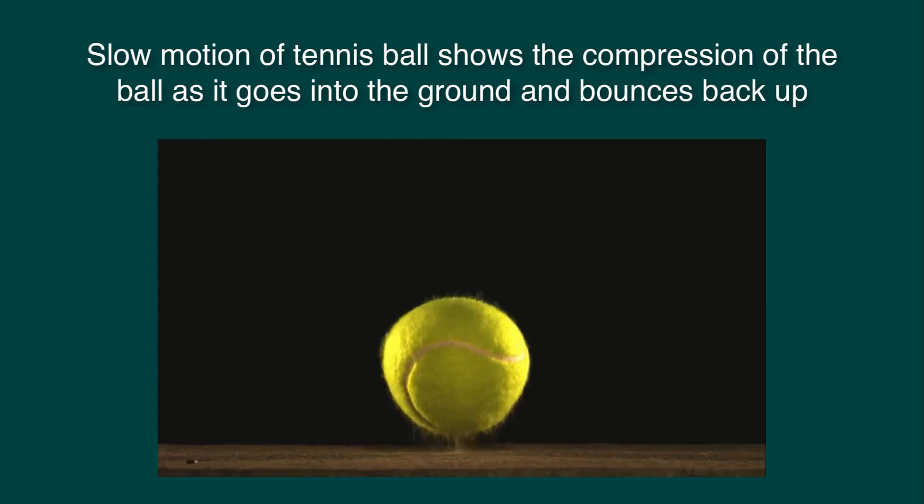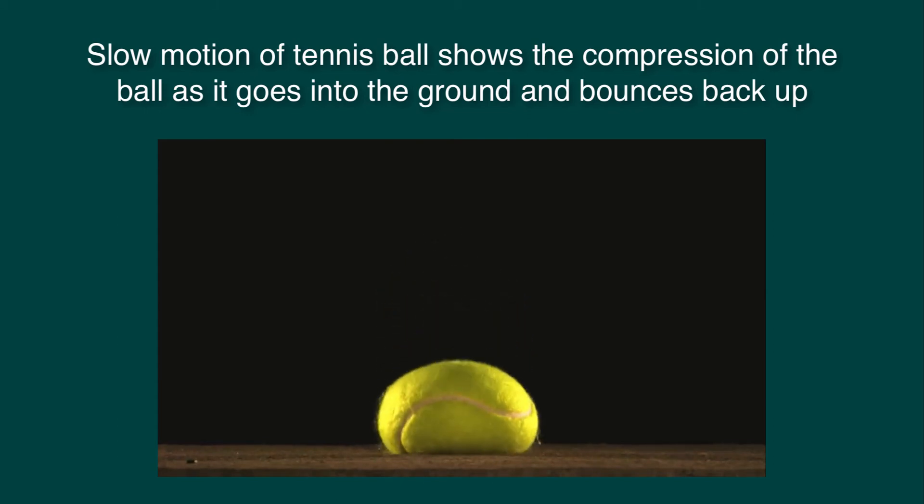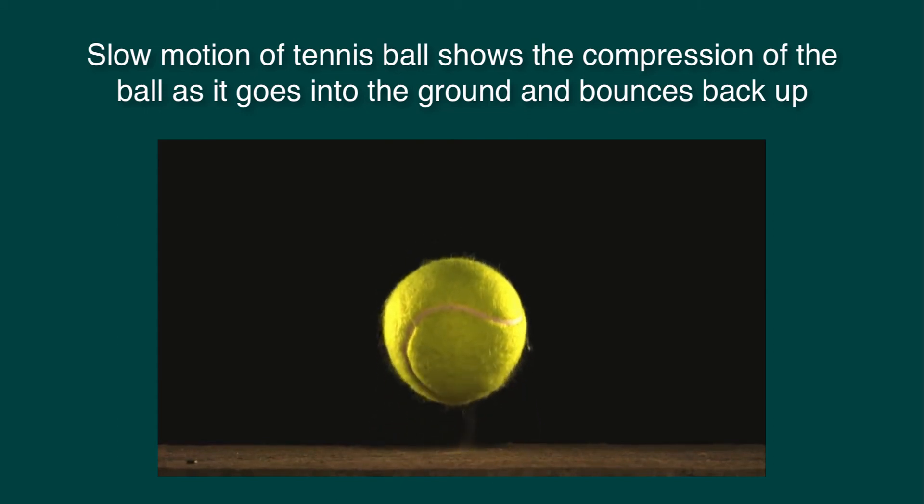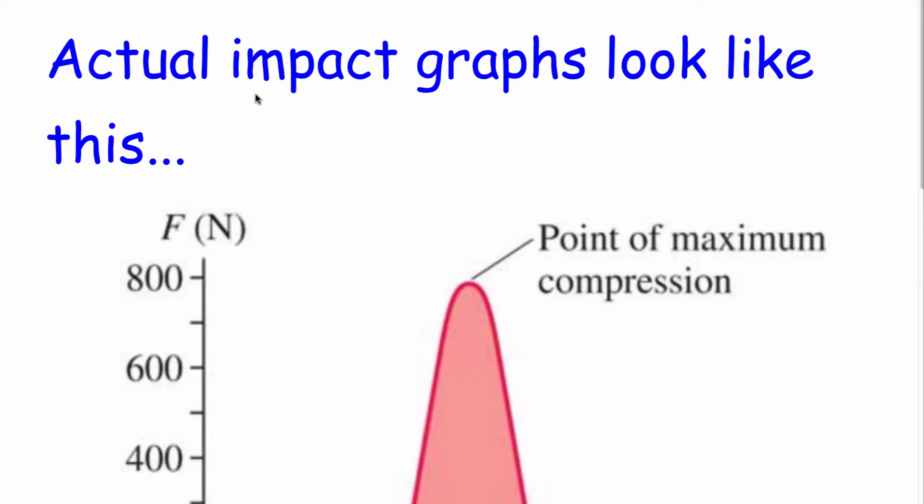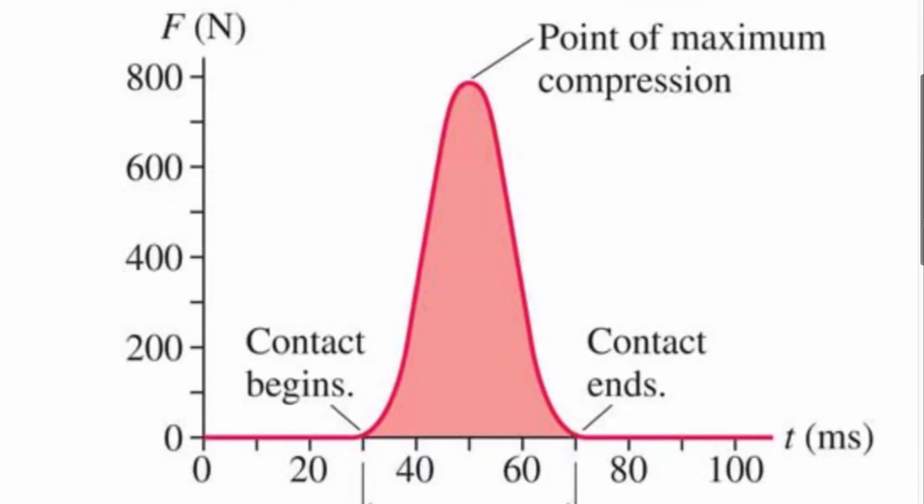As this tennis ball comes down and makes contact, the forces between it and the table top are changing as it goes in and coming back out again in a non-linear fashion. So when objects actually come into contact, the graph of the force versus time will not be a linear shape. It will not be a triangle. It'll end up looking more like this.